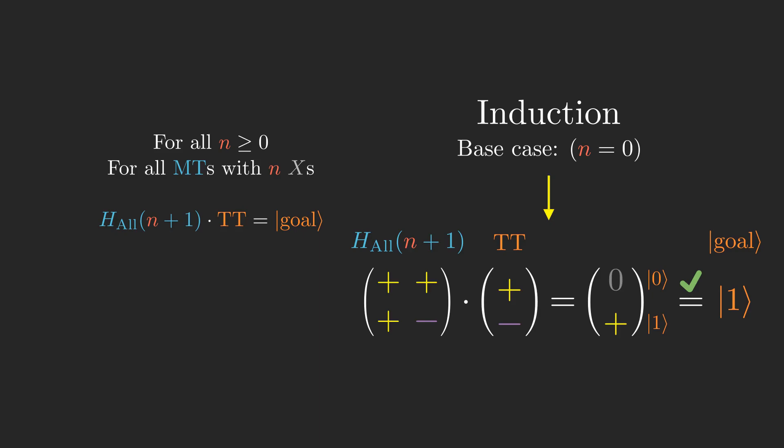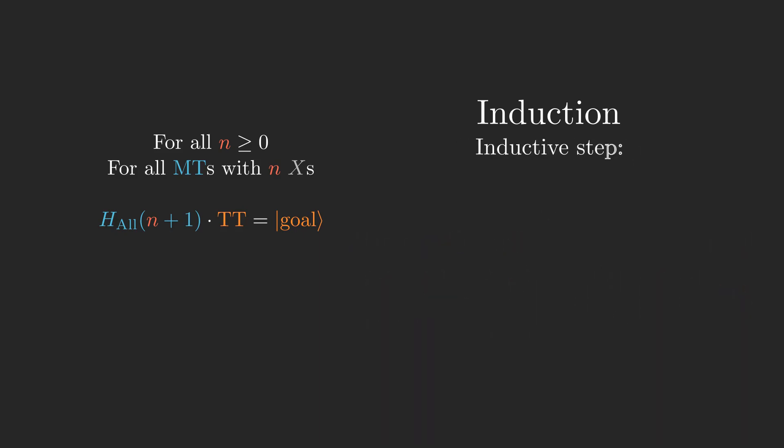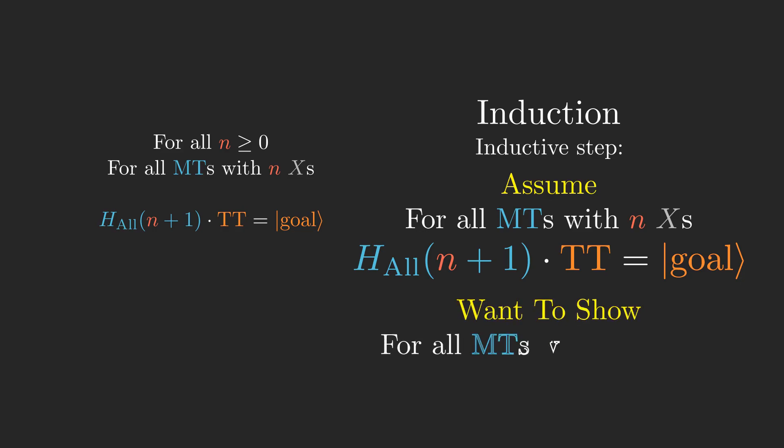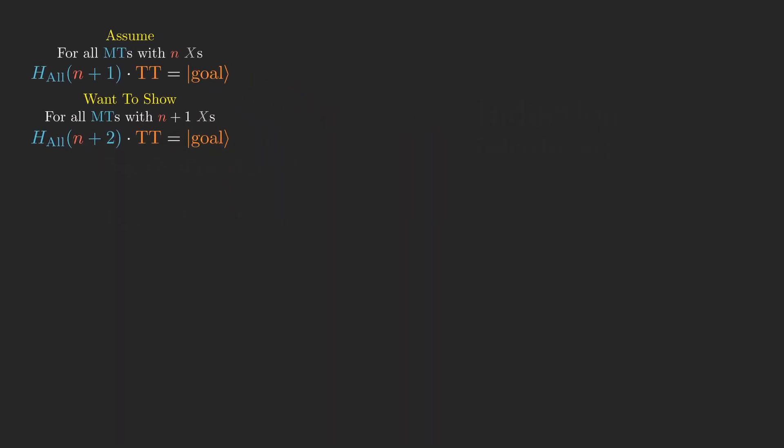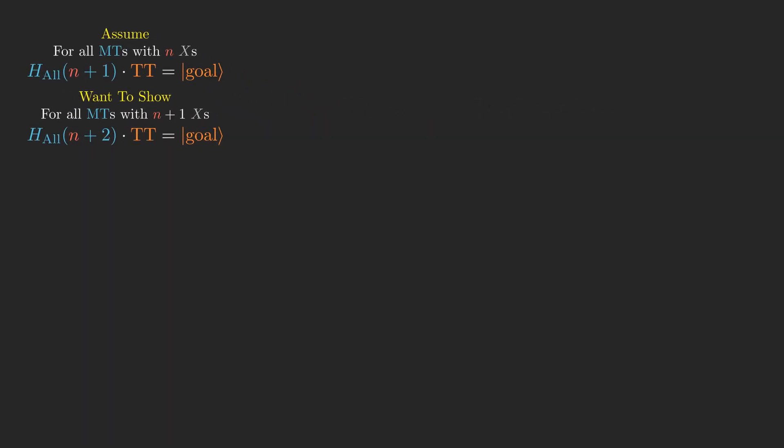Now we need to do the inductive step, which means assuming that what we are trying to prove is true for some number n of x's, and using that to prove that it is still true for n plus 1 x's. When we have n plus 1 x's, we have n plus 2 total qubits, so we need to show that h all of n plus 2 times tt equals goal.